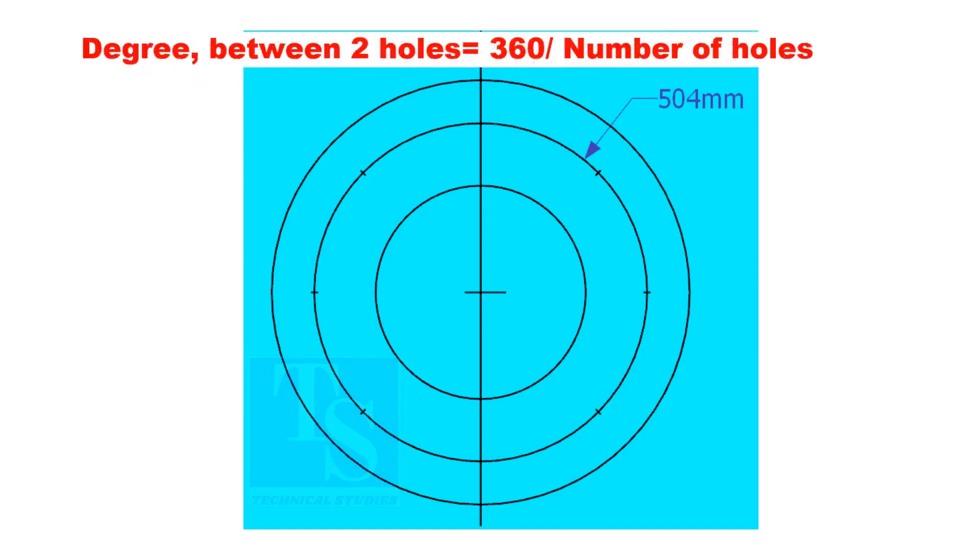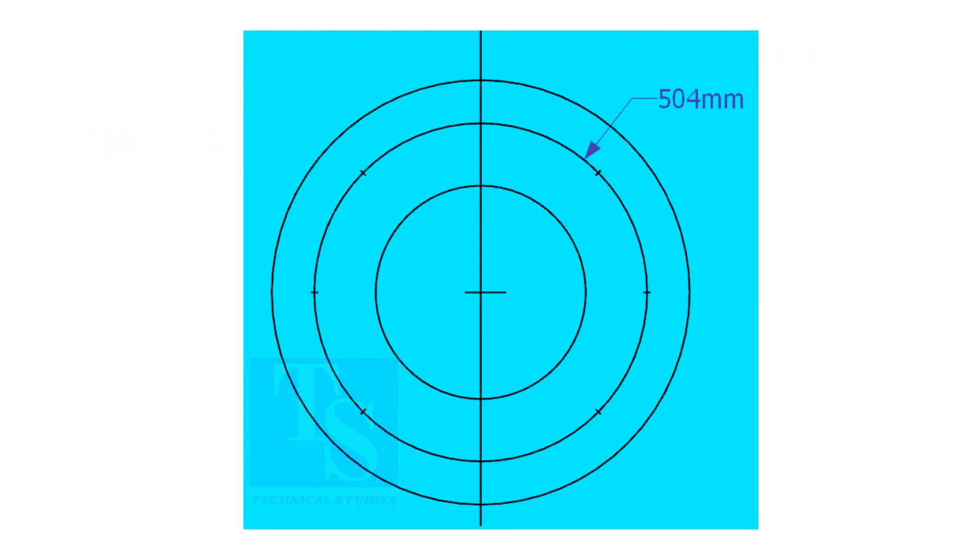If you divide 360 by the number of holes, you will get the angle between two holes. Cord length equals sine 45 divided by 2, multiplied by PCD.